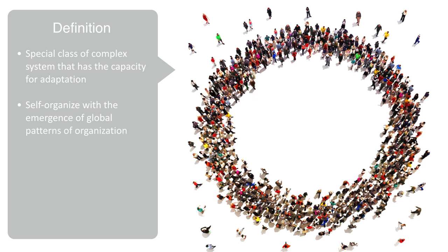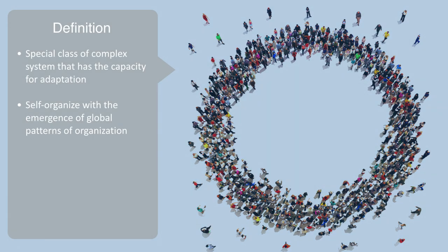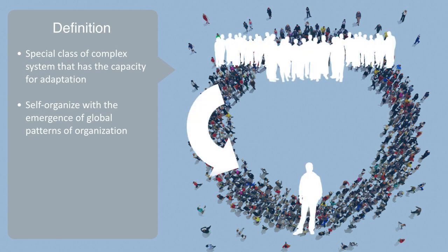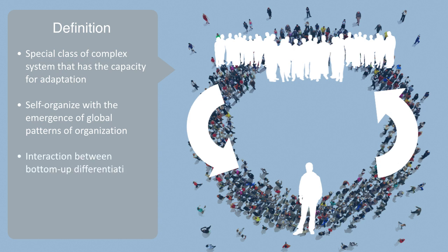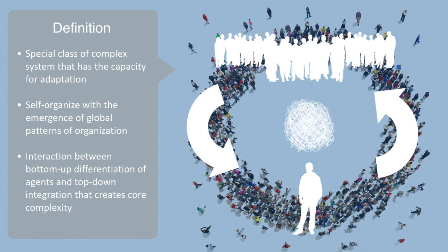This macro scale organization then feeds back to the micro level, as the system has to perform selection upon the agents based upon their contribution to the whole system's functioning. Thus, there develops a complex dynamic between the bottom-up motives of the individual agents and the top-down macro scale system of organization, both of which are often driven by different agendas but are ultimately interdependent. It is this interaction between bottom-up differentiation of agents with different agendas and top-down integration in order to maintain the global pattern of organization that creates the core dynamic of complexity within these systems.